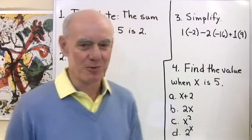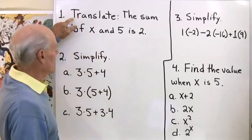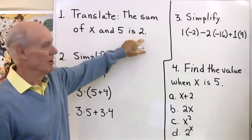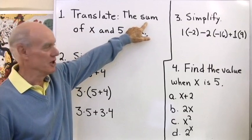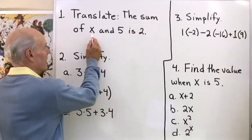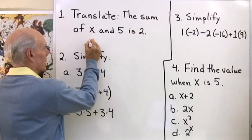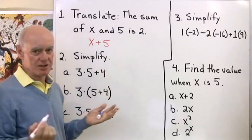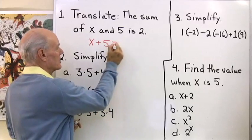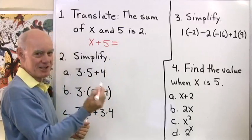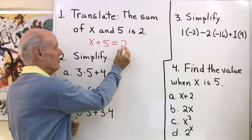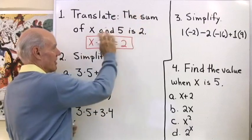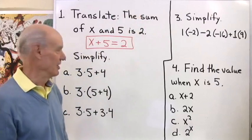Let's look at our first problem. We want to translate the sum of x and 5 is 2. We know that sum always means addition, so the sum of x and 5 is going to be x plus 5, and the word 'is' translates into equals. So the sum of x and 5 is 2 — in symbols, x + 5 = 2.